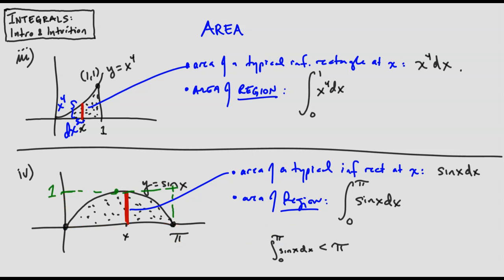If we chop that rectangle in half and then each half in half again, each of the four triangles has the same area, so each would be pi over 4, meaning just two of them would be pi over 2. It's clear that the area under the curve is a little bigger than pi over 2 because the curve sticks out beyond the triangles. So whatever the integral is, it's definitely bigger than pi over 2—the exact value will come in a later lecture.